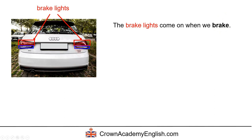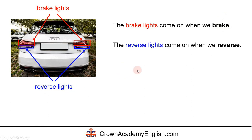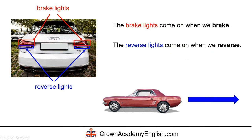And in blue, just below the brake lights, we have some white lights. We call them reverse lights. The reverse lights come on when we reverse. Notice the expression: lights come on. So the car is reversing. To reverse means to go backwards, to go in a backwards direction. This is forwards and this is backwards — reversing.